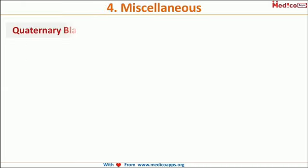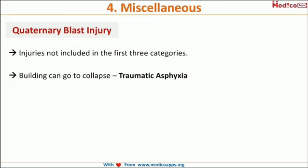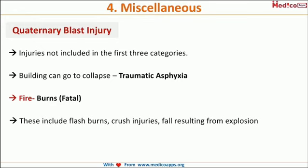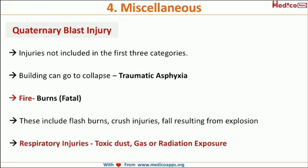Moving to quaternary blast injury: anything not covered in primary, secondary, or tertiary is classified here. This includes traumatic asphyxia when building material falls on a patient preventing breathing, burns from fires started by the bomb blast, crush injuries, fall from explosion, and respiratory injuries due to toxic gas, toxic dust, or radiation exposure. All such injuries are classified as quaternary blast injury.